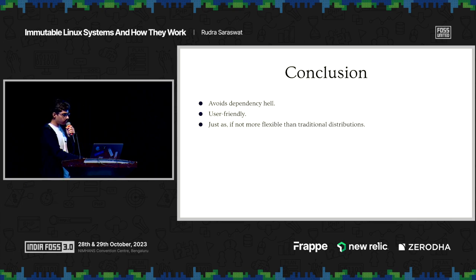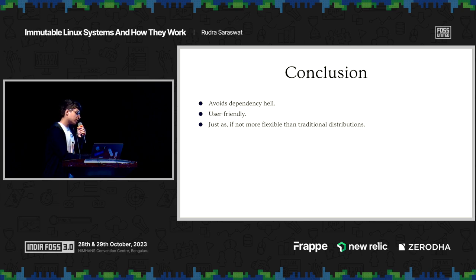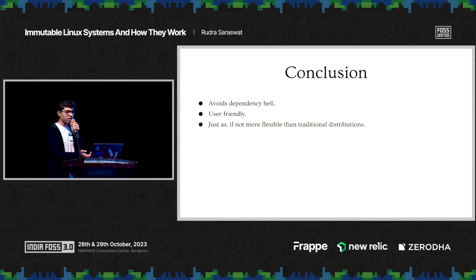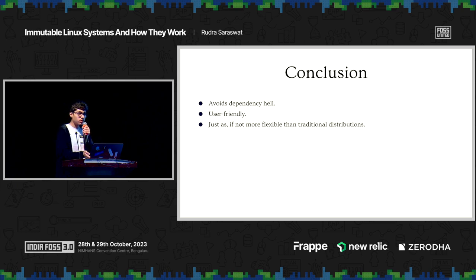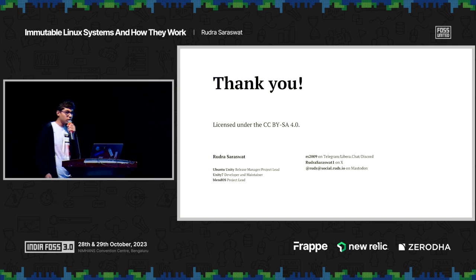To conclude this session, I feel immutable distributions are the way to go for Linux. It helps us avoid dependency hell — the phenomenon where a new version of a package depends on another version of a package that is yet to be updated, resulting in a whole bunch of conflicts. This also contributes to the user-friendliness of your system. Quality implementations are a lot more flexible than traditional distributions, as they allow you to declare your system using configuration files. Thank you for attending this session. Let me know if you have any questions.